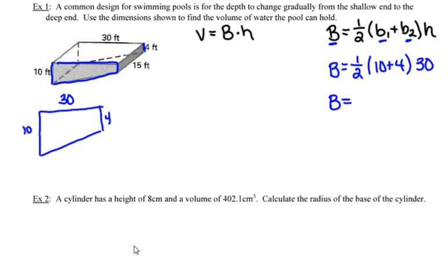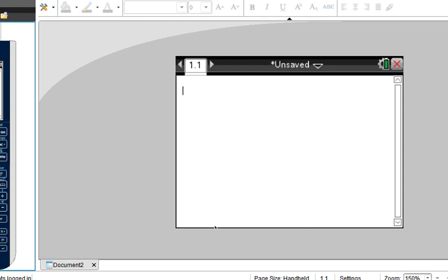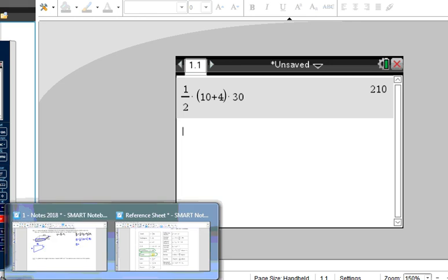And in order to calculate this area of the base, I'm going to dig out my calculator. And I'm simply going to plug all of those numbers right into my calculator. So I've got a half times, in parentheses, 10 plus 4 times the height of the prism, which we said was 30. So the area of that trapezoidal base, then, is 210.